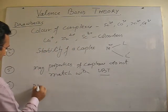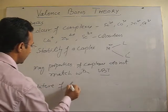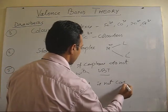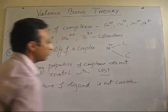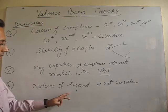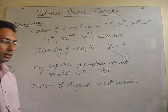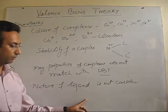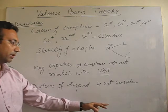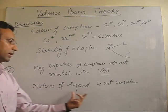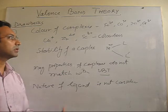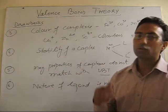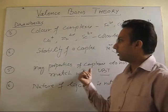So, moreover, one particular case, nature of ligand is not considered. As I have told you in the example of cobalt in the same lecture, that cobalt coordinating with ammonia is of different nature, cobalt coordinating with fluoride ion is of different nature. Different magnetic behavior. So, definitely nature of ligand is going to affect the property of the complex, which is not considered by VBT. So, VBT suffers from so many limitations.